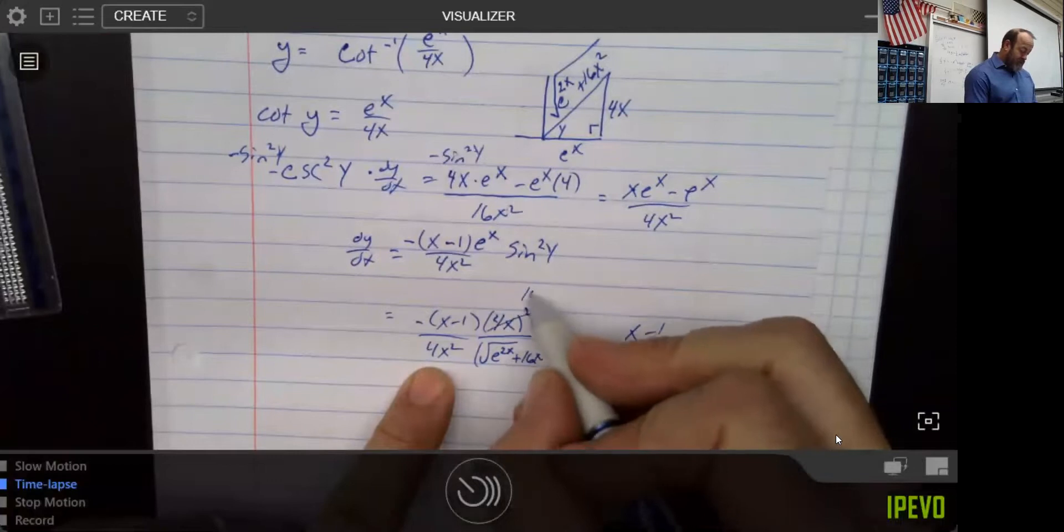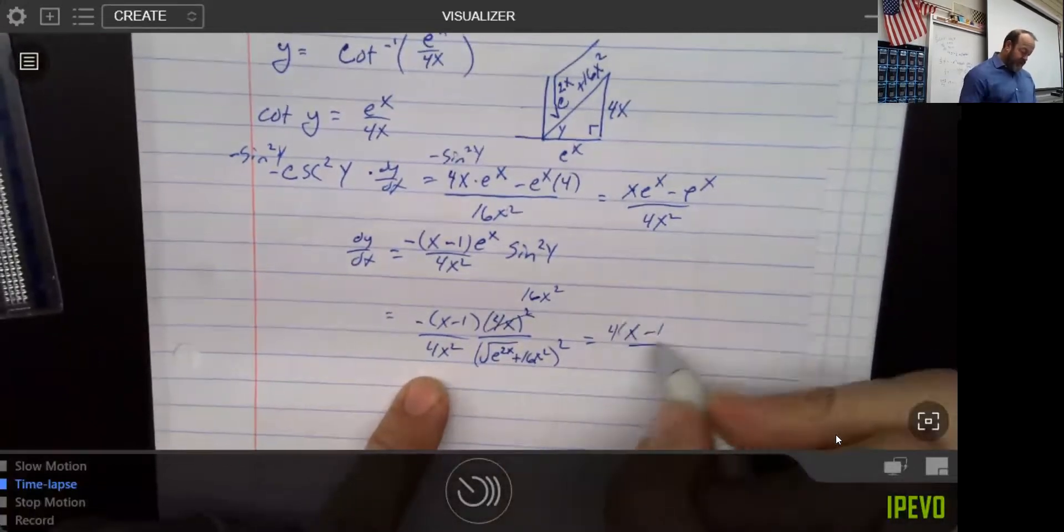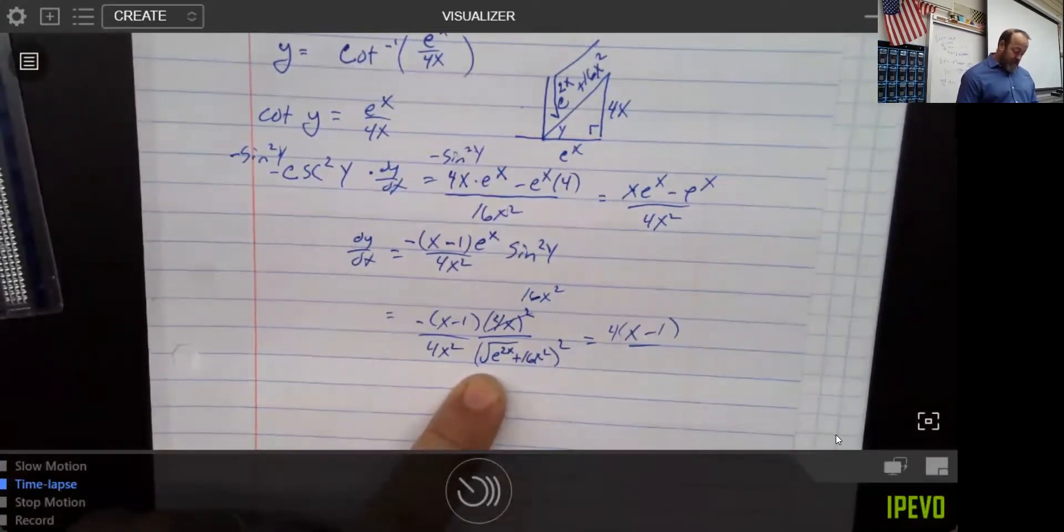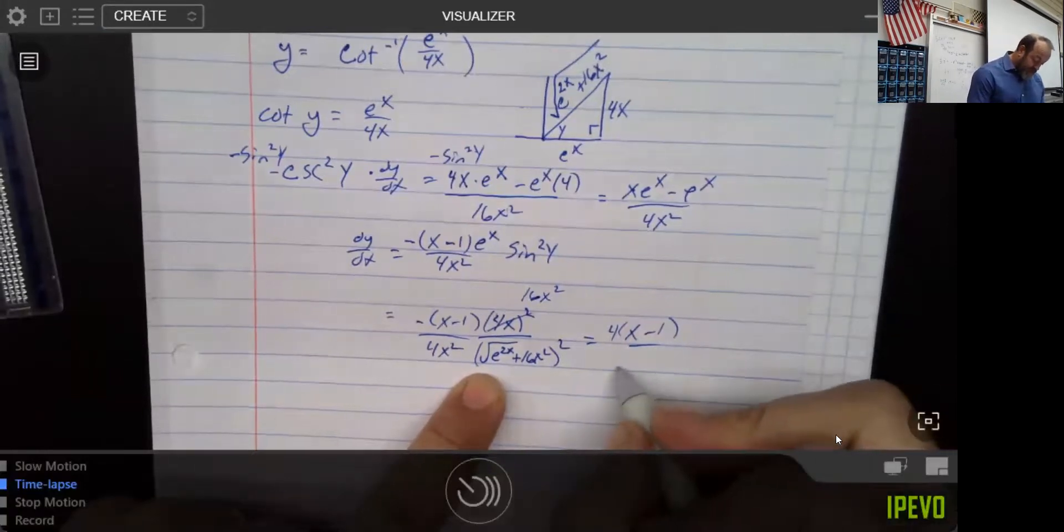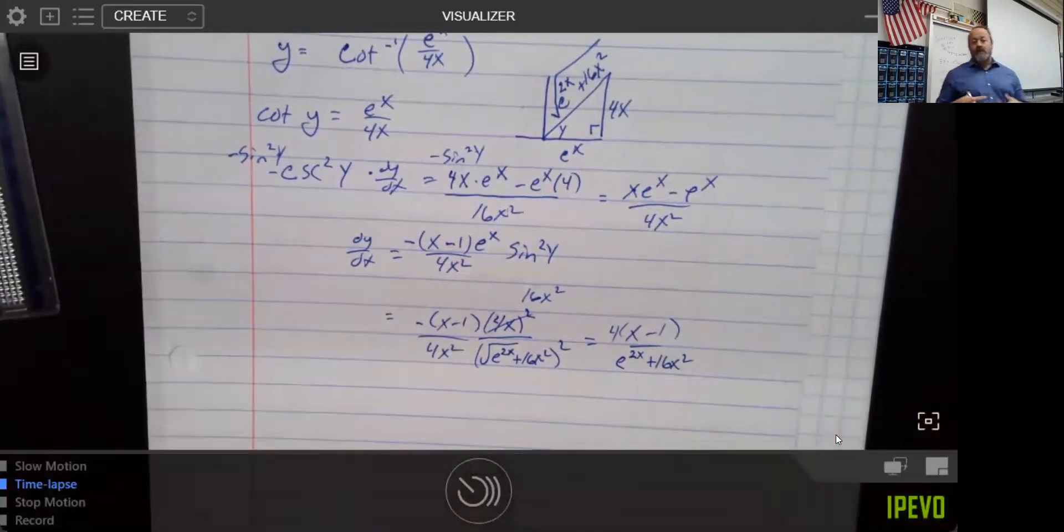16x squared, I'm going to write it that way so we can see it a little bit better. Those would cancel to leave a simple number 4, and then if I take the square root of this guy and I square it, we're just going to get e to the 2x plus 16x squared. And so, that's the way I generally like to do these problems.